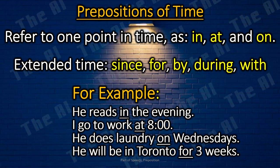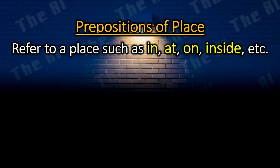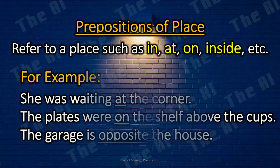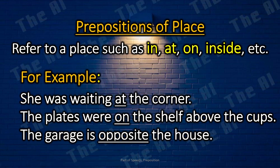He will be in Toronto for three weeks. Prepositions of place. The prepositions of place refer to a place such as in, at, on, and inside. For example: She was waiting at the corner. The plates were on the shelf above the cups. The garage is opposite the house.